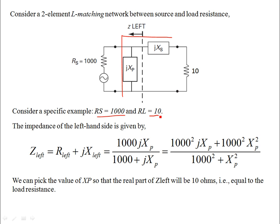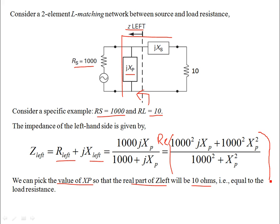With a source of 100kΩ and a load of 10Ω, looking at impedance Z_left from the source side, you see a parallel combination of the source resistor and shunt reactive element, producing both real and imaginary parts. You pick the value of XP so that the real part of Z_left equals 10Ω — the load resistance — meaning the 1000Ω source appears as 10Ω to the load.